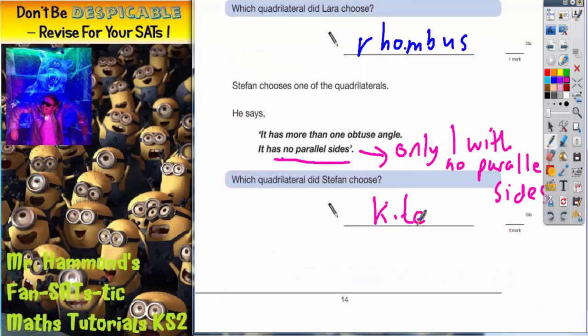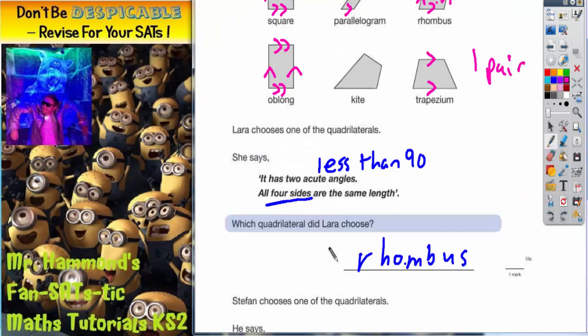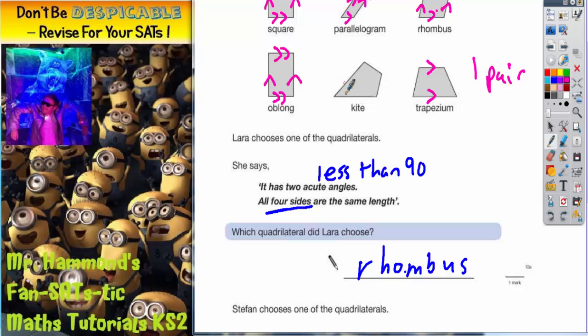Let's go back to the question. So it's got to be the kite just from that clue alone. But does it have more than one obtuse angle? Yes, it does.